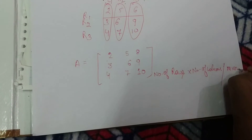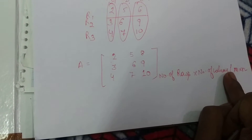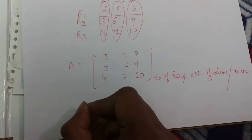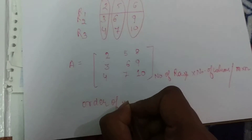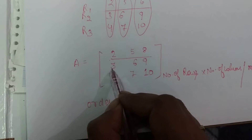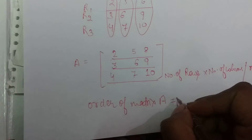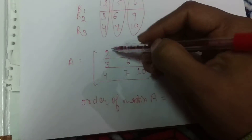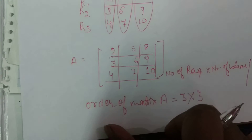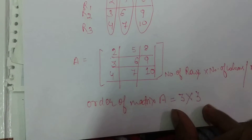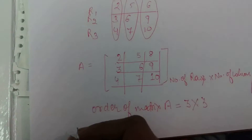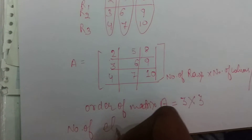We write the order as M multiply N, where M is the number of rows and N is the number of columns. So what is the order of this matrix A? How many rows? 1, 2, 3 — so 3 rows. How many columns? 1, 2, 3 — so 3 columns. The order of matrix A is 3 by 3. We do not multiply for order; we just write it as 3 by 3.